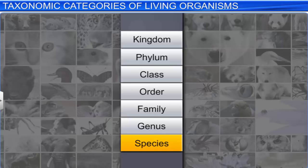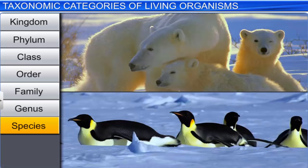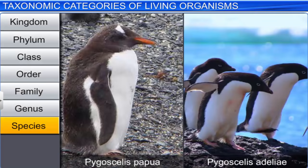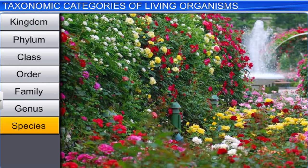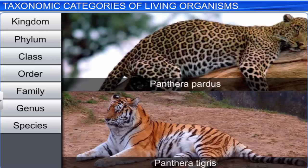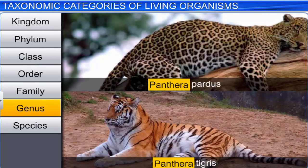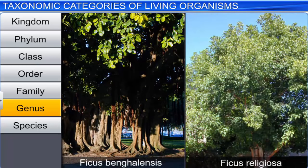Species is the basic rank in a taxonomic category. It is a group of individual organisms with fundamental similarities. You can distinguish one species from another closely related species based on morphological characters. Think of the varieties of mangoes available in the market, or the different species of rose in the garden. The next rank is genus, which consists of a group of related species that exhibit similar characteristics in comparison to species of other genera. In case of plants, the banyan and peeple trees have certain similarities, and therefore belong to the genus Ficus.